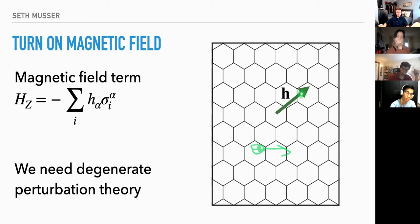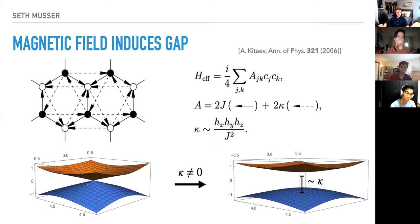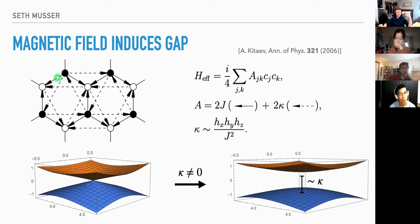In the bulk the Majoranas travel around gaplessly. Now we turn on a magnetic field. Using degenerate perturbation theory, we have to start from the flux-free ground state and apply sequences of terms that return to it — we can't just apply a sigma on a single link because that introduces fluxes; instead we go around a loop. What emerges is our same model but with next-nearest-neighbor hopping with coupling kappa, which is like h_x h_y h_z over J squared.